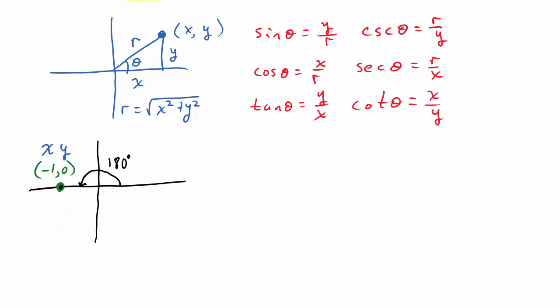So let's find r. Well, r is equal to the square root of x squared plus y squared. So r is the square root, well, negative 1 squared is 1 plus 0 is 1, and then the square root of 1 is 1. All right. So now we have x is equal to negative 1, y is equal to 0, and r is equal to 1.